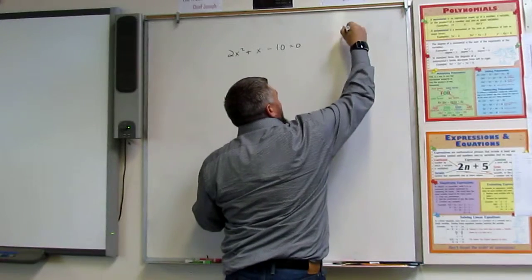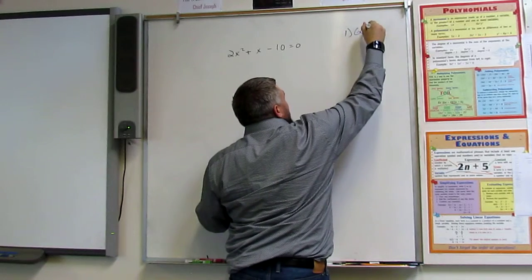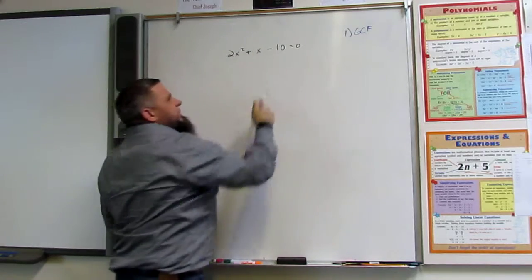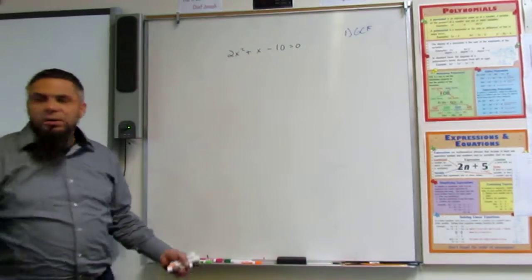All right. So, again, first step, GCF. Is anything going to 2, 1, and negative 10? No. So that's done.